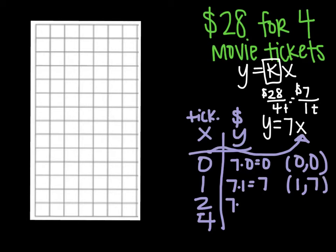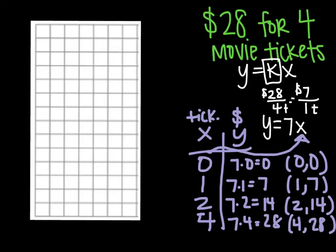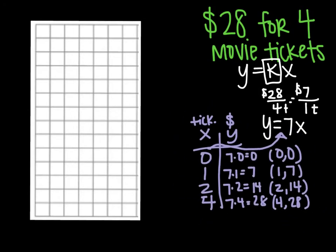Same thing, 7 times 2 is 14. So my x is 2, my y is 14. And then 7 times 4 is 28. x is 4, y is 28. Now that I have my table filled out, I know my coordinates now.